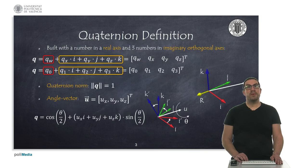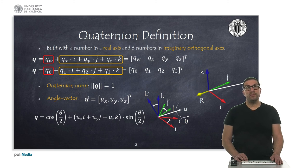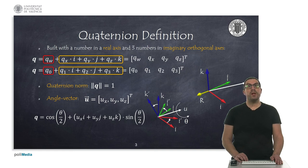A quaternion is built with a real component and 3 imaginary components orthogonal to the real axis. Therefore, a quaternion has 4 coordinates: qw, qx, qy and qz, although sometimes we will also refer to these coordinates as q0, q1, q2 and q3. The real coordinate has been highlighted in red, while the imaginary coordinates have been highlighted in orange, so you can distinguish them.